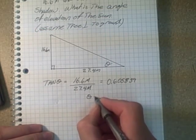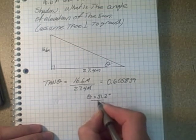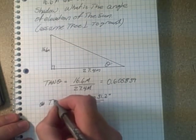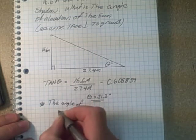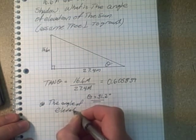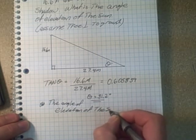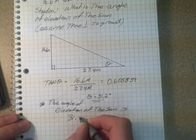So theta then equals 31.2 degrees. Therefore we can say the angle of elevation of the sun is 31.2 degrees.